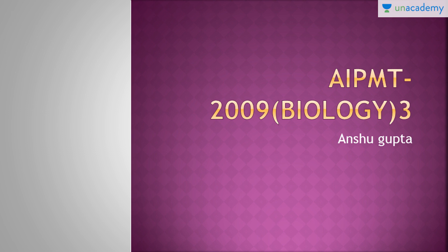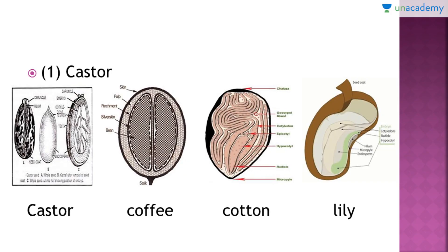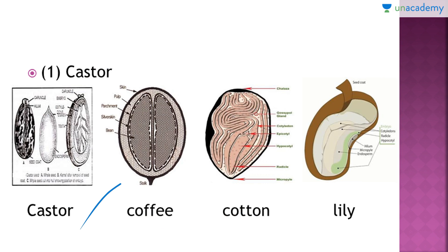Without wasting any more time, we will start with question number 30. We had finished question number 29 in the second tutorial of this course. Question number 30 is: an example of a seed with endosperm, perisperm, and caruncle is which of the following? The right answer is option number one, that is castor. Here you can see the diagram of a cross-section of all the seeds given in the options: castor seed, coffee seed, cotton seed, and lily seed. Out of these four, only castor seed has perisperm, endosperm, as well as caruncle.